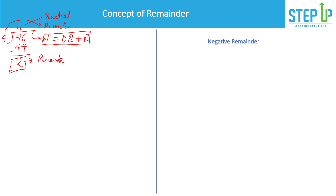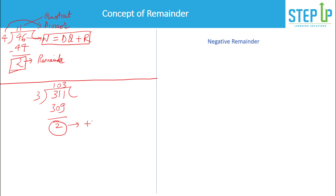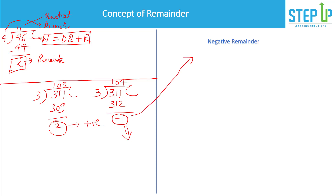Let's take another example: 311 divided by 3. 3 into 103 is 309, so your remainder is 2 — that is your positive remainder. But you could also do it differently: 3 into 104 is 312, and 311 minus 312 gives you minus 1. This is what I want to introduce you to — the negative remainder.